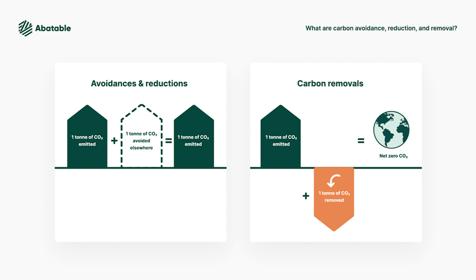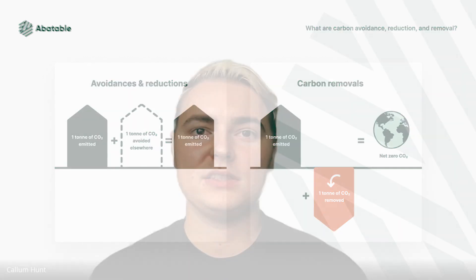Examples include activities such as the establishment of new tree planting activities which sequester carbon in the tree biomass, and which subsequently can be used in durable harvested wood products. Removal can be much more difficult to scale but is generally easier to measure and verify.